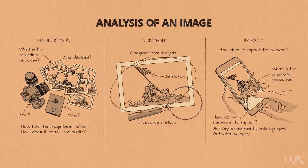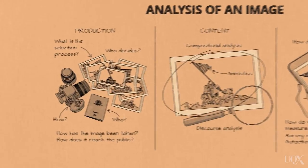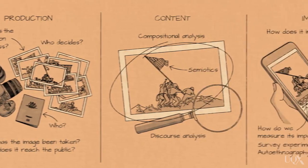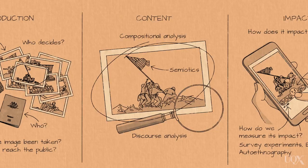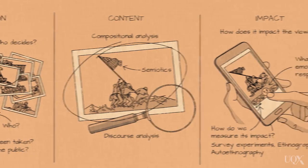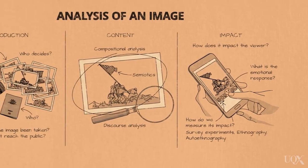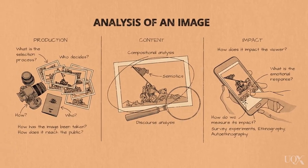In order to properly analyze a photograph — be it an image of a humanitarian disaster, of a major political event, or of a major conflict — there are three particular methodological steps we need to take. Step one involves an analysis of the production of the image. Step two involves an analysis of the content of the image itself. And finally, step three involves an analysis of the impact that the image has. Together, these three steps enable us to get an understanding of the meaning of an image.